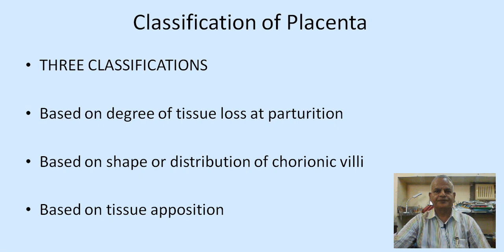The types of placenta have been classified in a number of ways. There are three classifications: based on the degree of tissue loss at parturition, based on the shape or distribution of the chorionic villi, and based on tissue apposition.